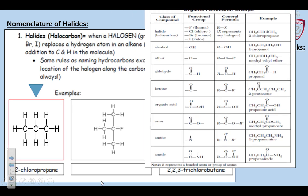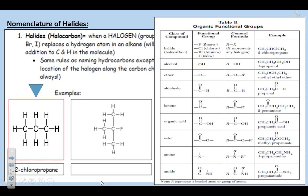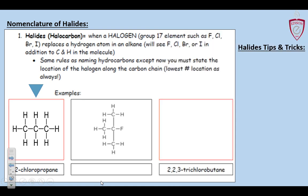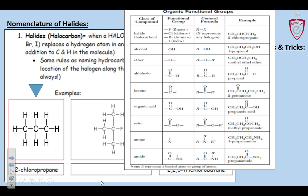First things first: halides. These are halocarbons — anything that has a fluorine, chlorine, bromine, or iodine in its chain. We're starting out here. Chloropropane is what we want to deal with. Mr. Milks put propane up there because that's what we know. Let's see how we change it to make it chloropropane.